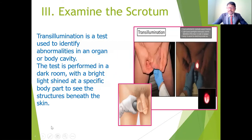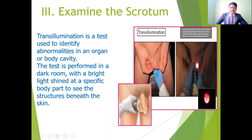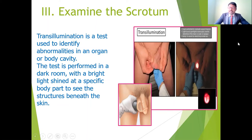Another examination procedure for the testes is transillumination. After checking for any lumps, swellings, spermatic cord, and vas deferens, we perform transillumination to identify abnormalities in the scrotal or testicular regions. A bright light is used to assess any abnormality in the testes and scrotum below the skin level. The light provides clear information about any swelling, discoloration, or other abnormalities. The patient is asked to stretch the testes so we can clearly examine for any swelling or skin color changes.